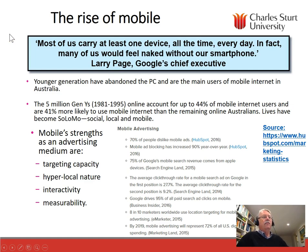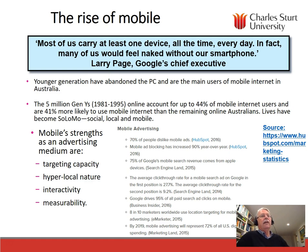The next thing we look at is the rise of the mobile. Most of us carry at least one device all of the time, every day — in fact, most of us would feel naked without our smartphone. Google's chief executive Larry Page has said this over recent years. The younger generation have abandoned PCs. Gen Ys, those people born between 1981 and 1995, account for up to 44% of mobile internet users and are 41% more likely to use mobile internet than the remaining online Australians. Basically, people's lives have become what they call SoLoMo — social, local, and mobile. The mobile phone has a great many strengths as an advertising medium, and it's particularly good at targeting particular kinds of consumers.